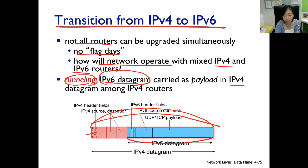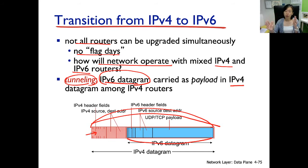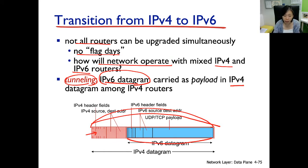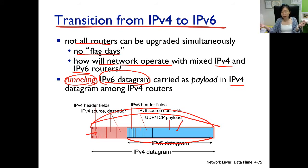The IPv4 packet has header fields — source IP address, destination IP address, and so on. Coming from the border of the IPv4/IPv6 connection, it travels the IPv4 network fine because the header fields are interpretable by routers in the IPv4 space. Eventually it reaches the other border between IPv6 and IPv4, and that border router extracts the IPv6 packet from the IPv4 packet and forwards it into the native IPv6 space. This enables an IPv6 machine talking to an IPv6 machine with the middle part being IPv4.